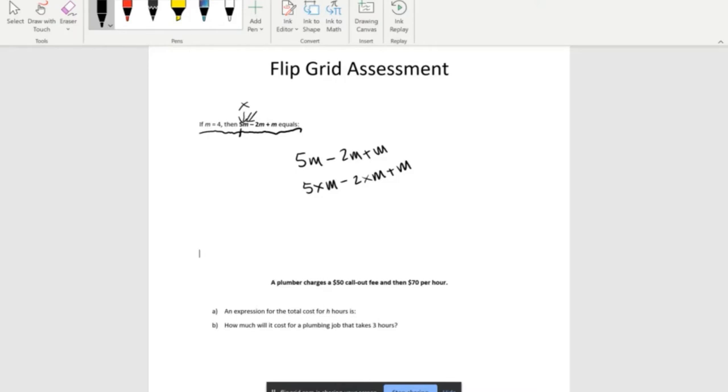Now we have to substitute. Because of the sentence up top, we know that m equals 4. So now let's write our expression, but we replace m's with 4's: 5 times 4 minus 2 times 4 plus 4.